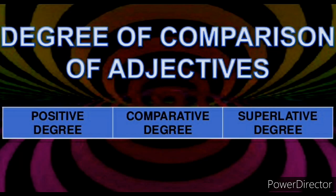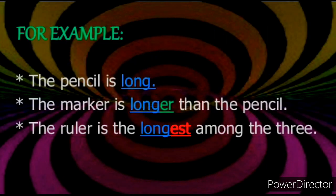Now there are three degrees of comparison of adjectives: positive degree, comparative degree, and superlative degree. For example, the pencil is long — positive degree. The marker is longer than the pencil — longer, comparative degree. The ruler is the longest among the three — longest, superlative degree.